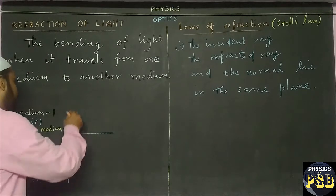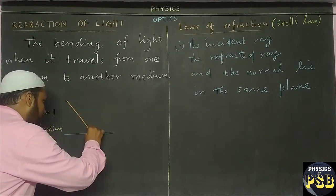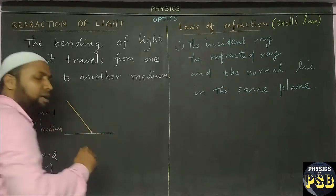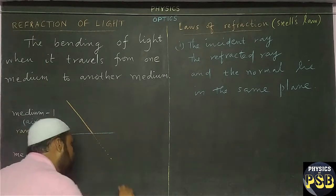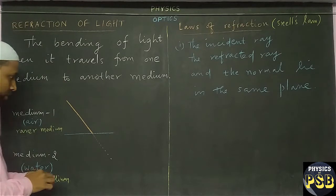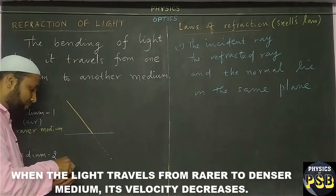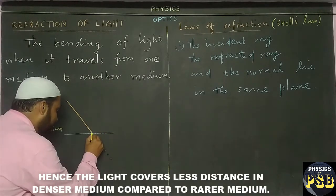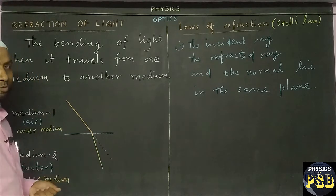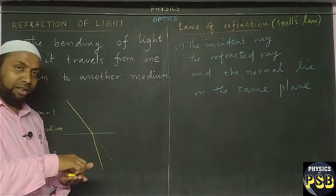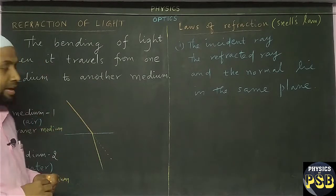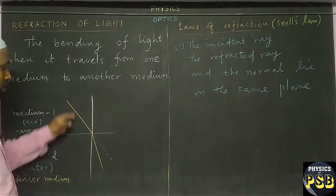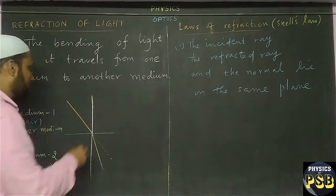Let me show this with the help of a diagram. This is a rarer medium. A ray of light is incident on the line of separation and it just bends. Actually it has to go straight, but due to the different medium it will bend. After bending it appears like this. Now I draw a normal to measure the angle. A line which is drawn perpendicular to the surface is known as the normal.